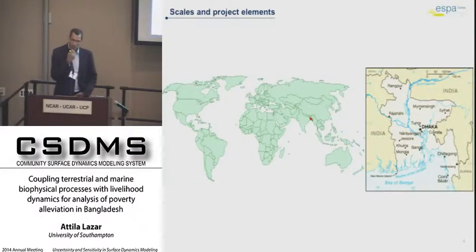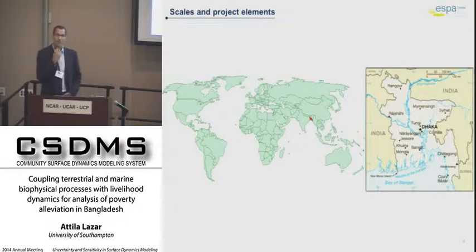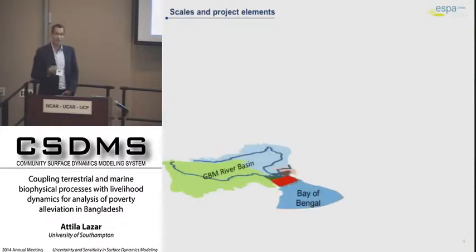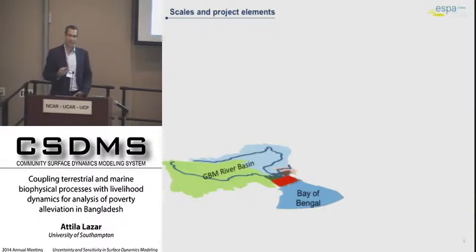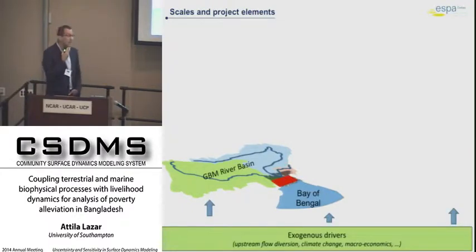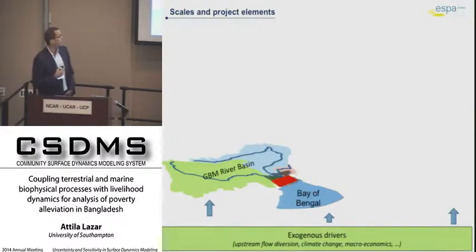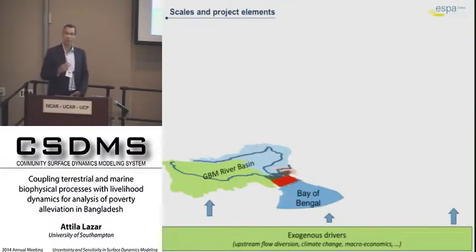We are located in coastal Bangladesh, the tidal influence part of the Ganges-Brahmaputra-Meghna River delta plane. We have a focus on the coastal zone, but to be able to say anything useful about the coastal zone, we have to consider what is outside of the study area. We are considering exogenous drivers where the Bangladeshi decision makers have little influence, like upstream flow diversion in China and India, or climate change, or some macroeconomic changes.